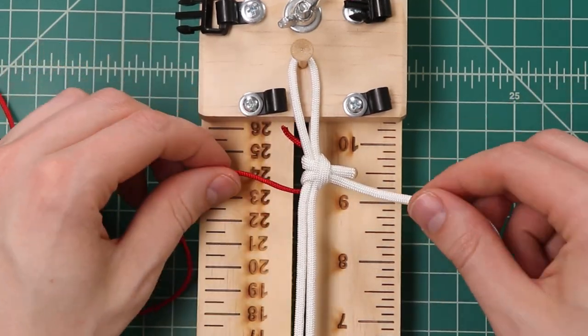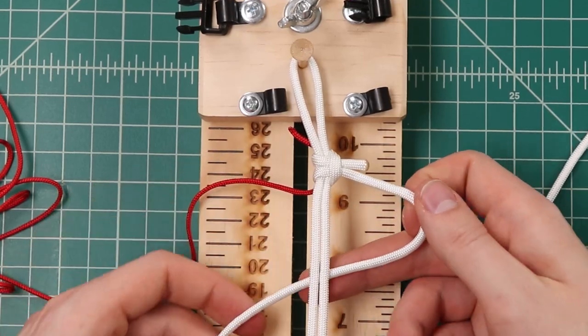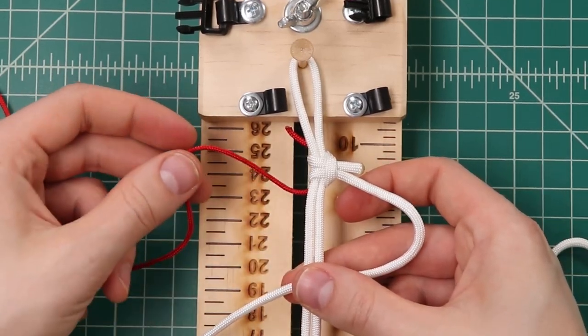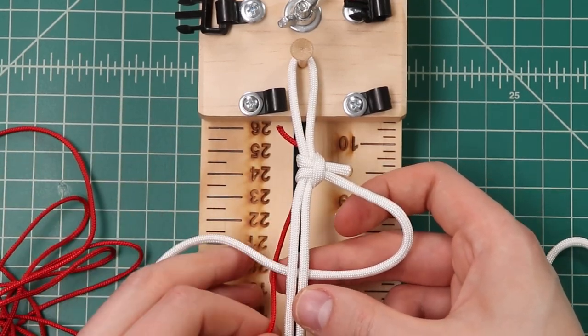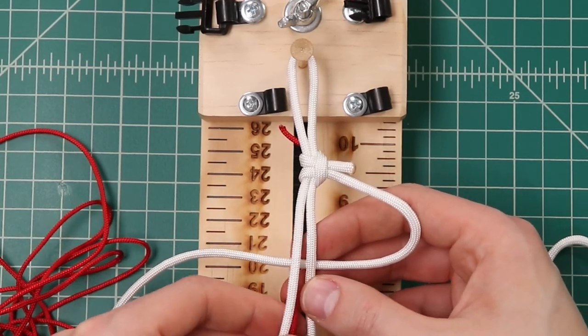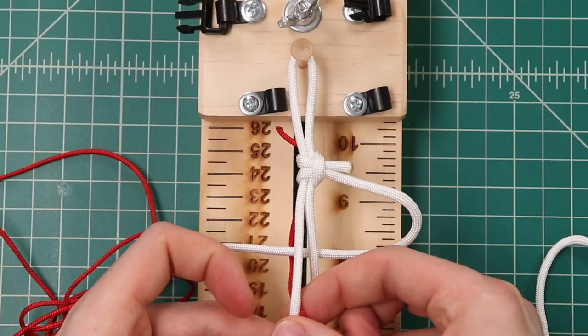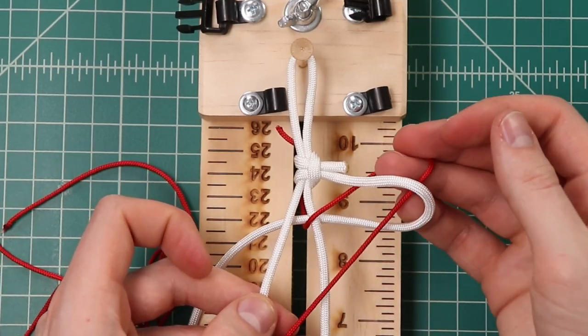Now this weave is pretty much like the Cobra weave. We're going to start by putting our right side cord underneath and this red cord is going to go under that. So it's kind of like we're building the Cobra upside down depending on what way you learned. Bring the red cord underneath and up through the middle before going down through this loop on the right.